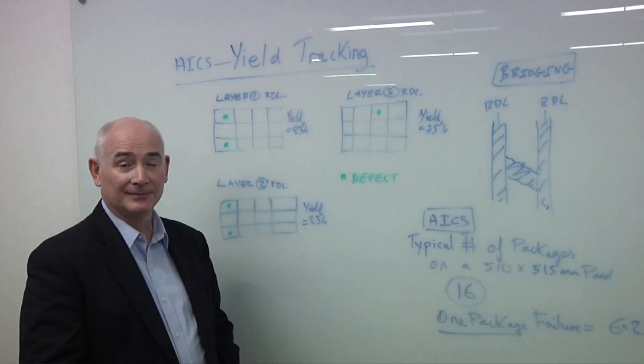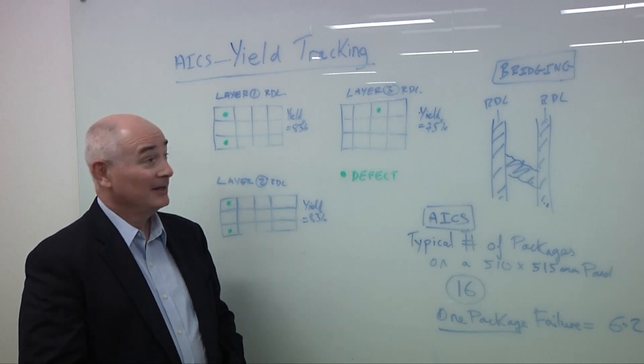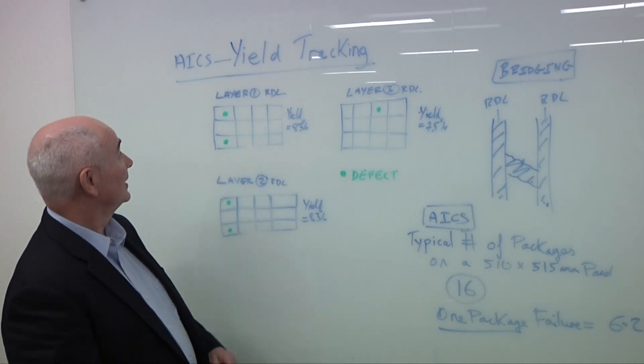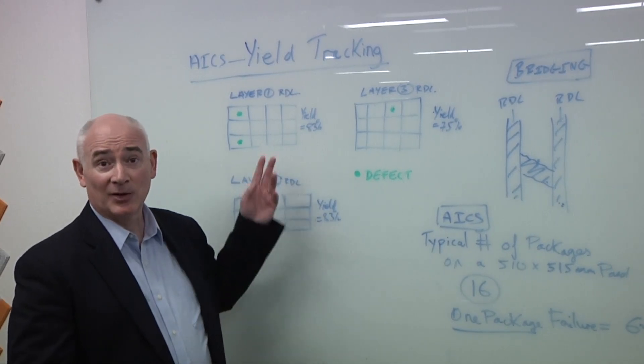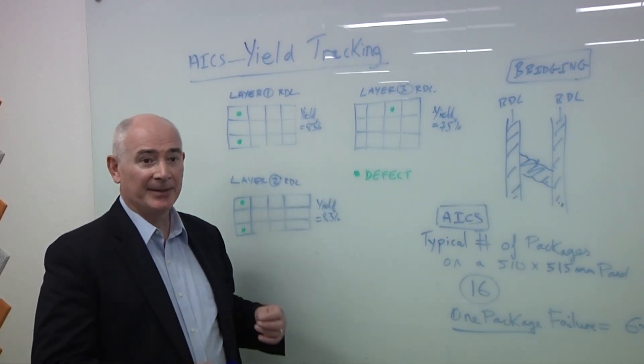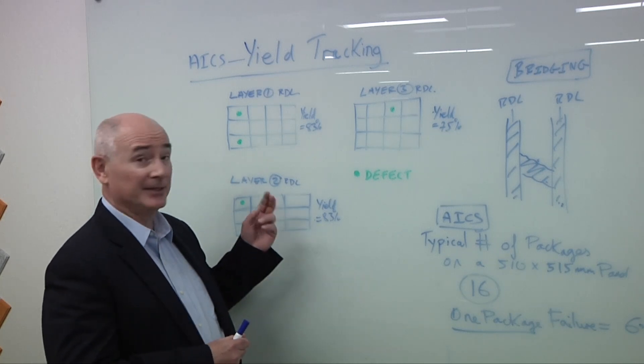Let's take a closer look. Sure. Keith, what are we looking at? Yes. So as you can see on this image over here, I'm talking about advanced IC substrates, yield tracking. And I show three different layers, layer one, layer two, layer three, and the impact of having killer defects at the different layers.